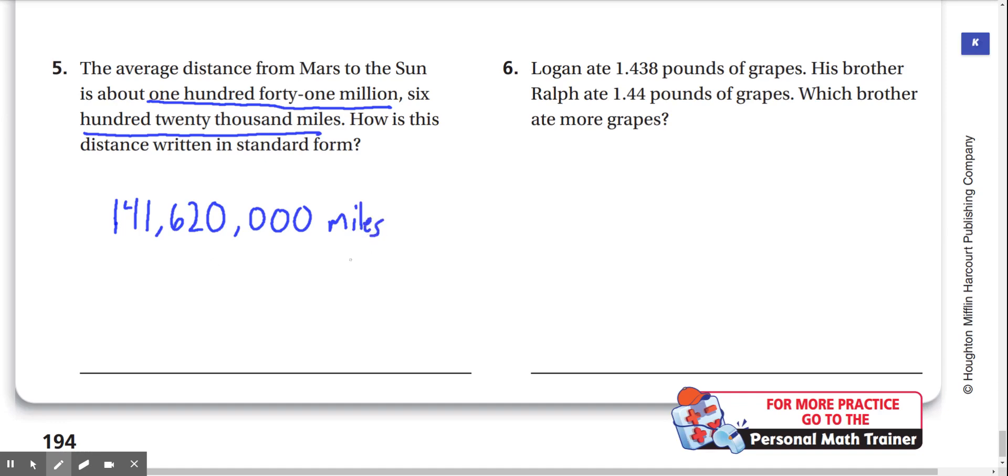Number 6. Logan ate 1.438 pounds of grapes. His brother Ralph ate 1.44 pounds of grapes. Which brother ate more grapes? So look at the ones place for both of these numbers. They're both the same. The tens place are both the same. And the hundreds place is where it's different. Who has the greater hundreds place? Well, Ralph does. Ralph has a hundreds place of 4, and Logan has a hundreds place of 3. And we know that 4 is greater. So Ralph ate the most grapes.